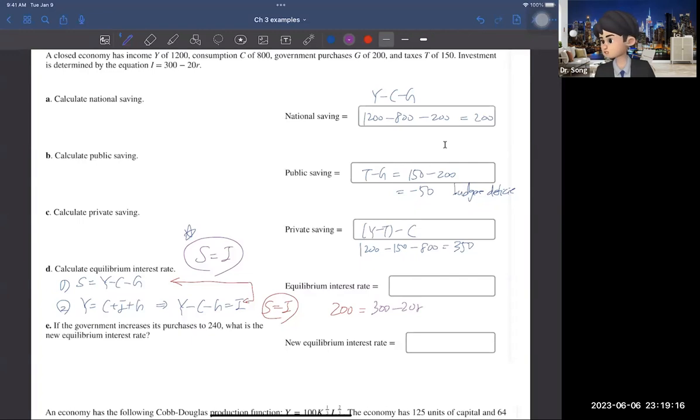So, we have one equation, one unknown, so that you can find the solution. So, here, 20R equals 100. That means that R equals 5. So, the equilibrium interest rate is 5.